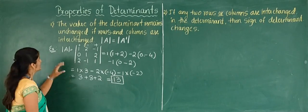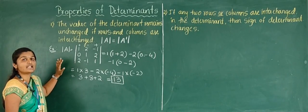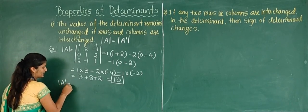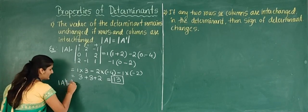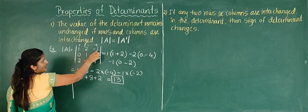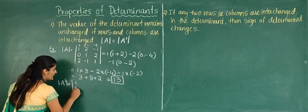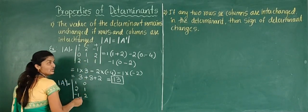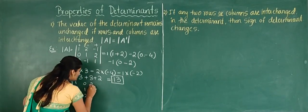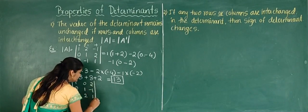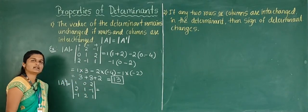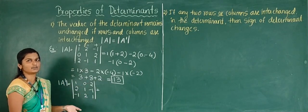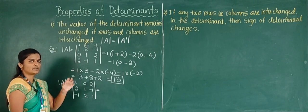Now let me find the determinant of A transpose. The rows of A become the columns of A transpose: first column (1, 2, −1), second column (0, 1, 2), third column (2, −1, 1). Evaluating this determinant gives the same answer of 13. So determinant of A equals determinant of A transpose, confirming the first property.